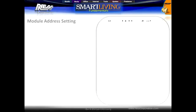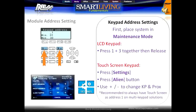Programming keypad addresses is done by placing the system first into maintenance mode. For the LCD keypad, press the 1 and 3 buttons together and then release, and use the up and down arrows to change the keypad address. For touchscreens, press the settings button followed by the admin button, and you will find the keypad address and the prox reader address setting at the top of the list.